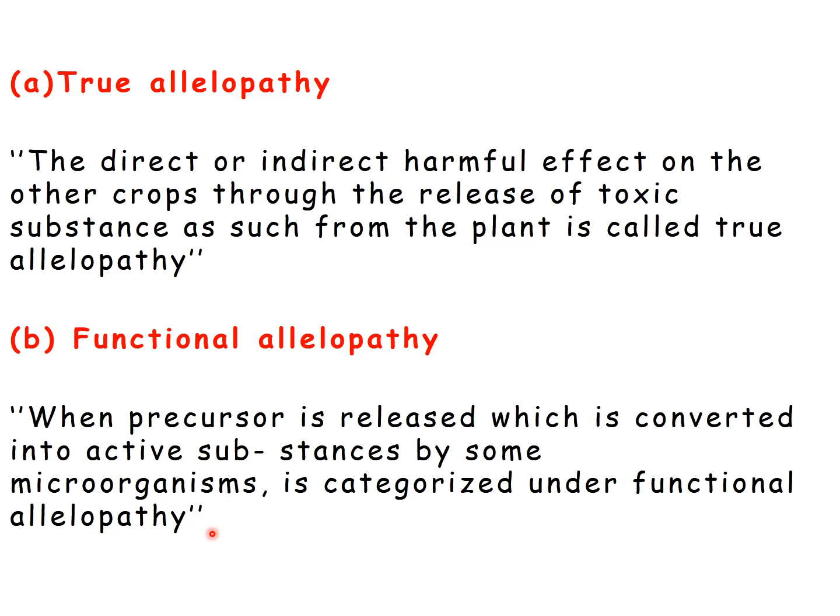In functional allelopathy, the chemical released by a plant species is converted into an active substance by microorganisms, and that active substance then causes the harmful effect. These are the two types: true allelopathy and functional allelopathy.